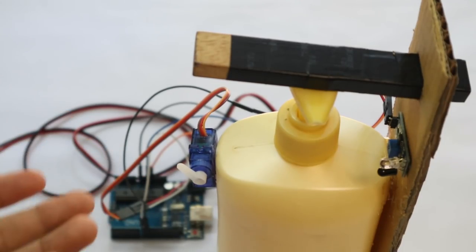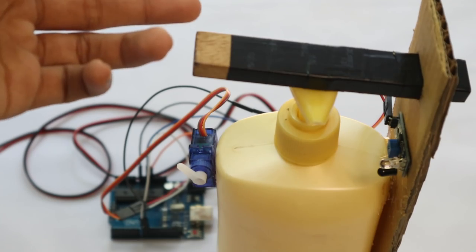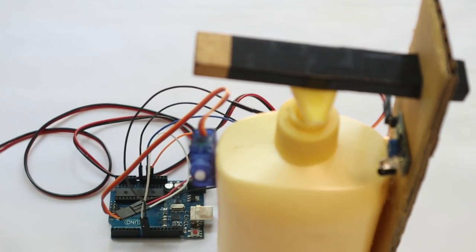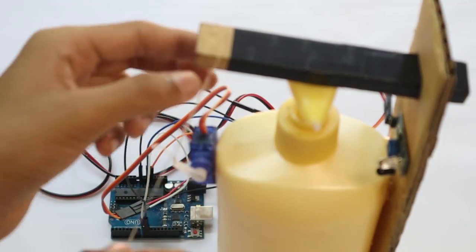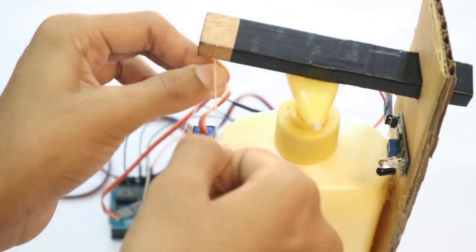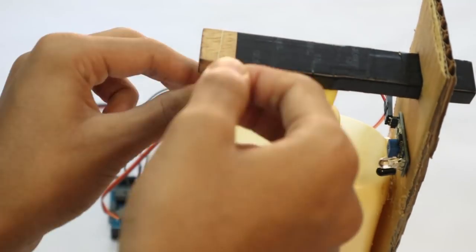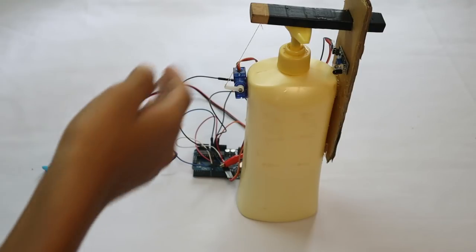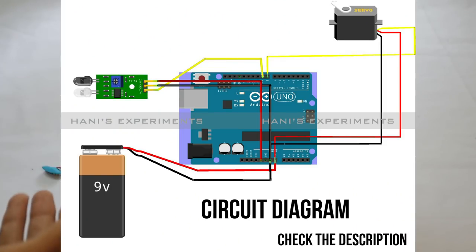Now the next step is to thread your servo to the wooden block. Now I have tied the servo to the wooden block. This is the circuit diagram. I will give the circuit diagram and the code in the description below.